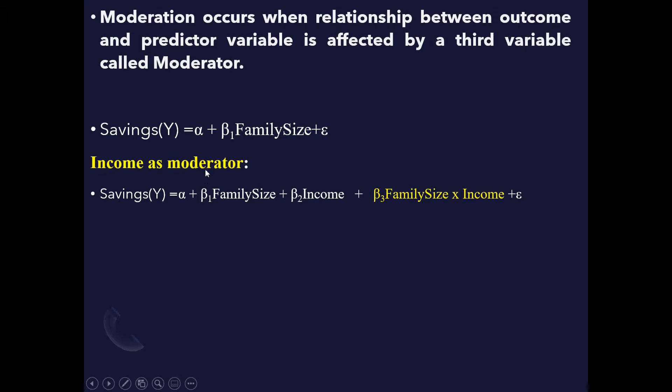In that case our regression equation would be: saving is a function of family size, plus income (the moderator), plus the interaction effect between family size and income. To see whether this third variable — income — has any interaction effect, we need to perform moderation analysis.